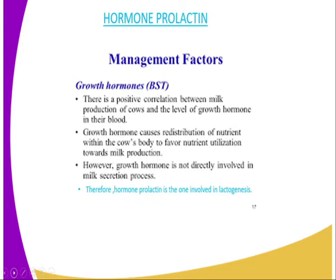We also have the growth hormone. There is a positive correlation between milk production of a cow and the level of growth hormone in the blood. The growth hormone causes redistribution of nutrients within the cow's body to favor nutrient utilization towards milk production.